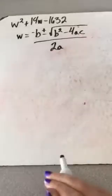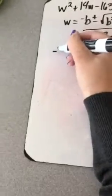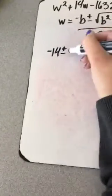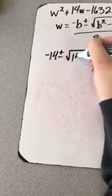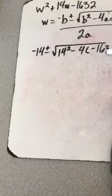Alright, and then you're just gonna plug in. So B is 14, so the opposite of 14 is negative 14, plus or minus square root of 14 squared minus 4. A is 1 so we don't have to write that, but C is negative 1632.